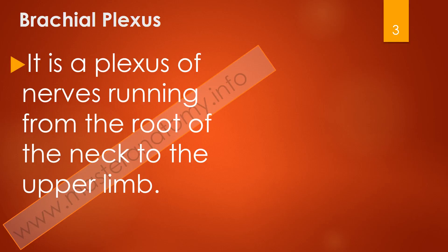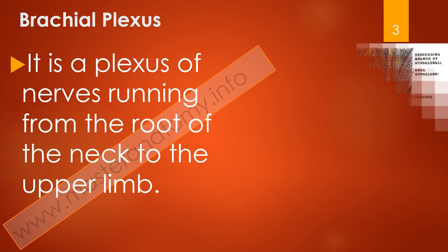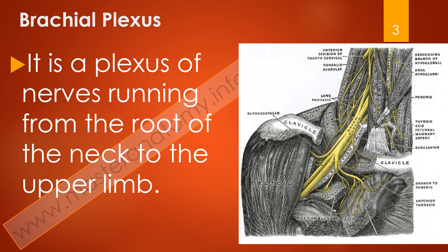The brachial plexus is a plexus of nerves running from the ventral rami of C5 to T1 vertebrae. They run from the neck behind the clavicle into the upper limb, supplying some muscles in the neck, some muscles of the trunk, and all the muscles of the upper limb.